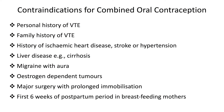Question six: who shouldn't be using the combined oral contraceptive pill? Contraindications include: personal history of venous thromboembolism; family history of VTE in a first-degree relative under 45 years; known thrombogenic mutations; history of ischaemic heart disease, stroke, or hypertension; liver disease such as cirrhosis; migraine with aura; oestrogen-dependent tumours; major surgery with prolonged immobilisation; and the first six weeks postpartum in breastfeeding mothers. Smokers over the age of 35 should not take the COC. In non-smokers with no other contraindications, COC can be continued until age 50.